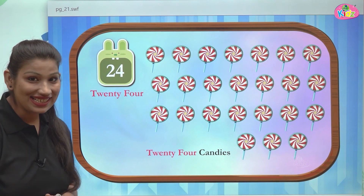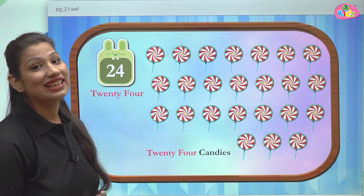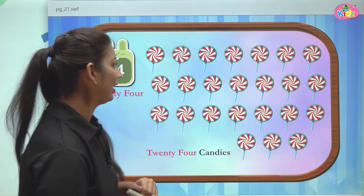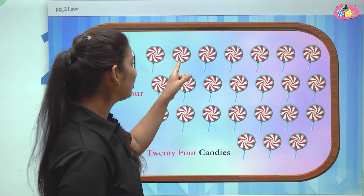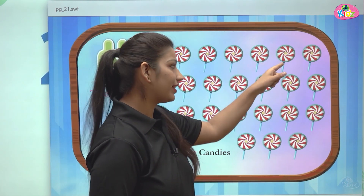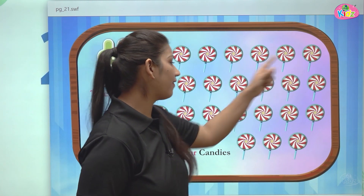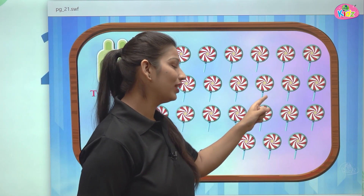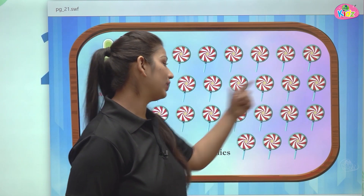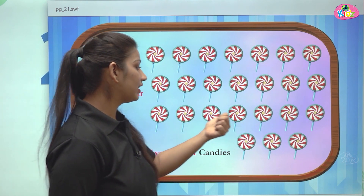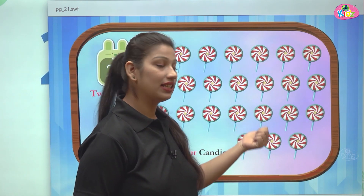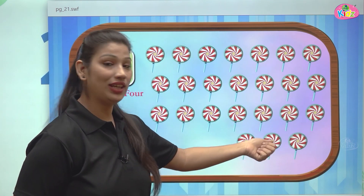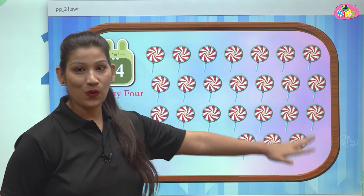24 — here we can see candies and they are 24 in number. Let us count them: 1, 2, 3, 4, 5, 6, 7, 8, 9, 10, 11, 12, 13, 14, 15, 16, 17, 18, 19, 20, 21, 22, 23, 24.